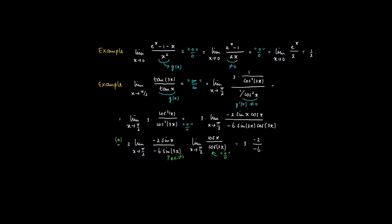So we get 3 times minus 2, since sin(x) goes to 1 at π/2, divided by minus 6, times the limit as x goes to π/2. The derivative of cos(x) is minus sin(x), divided by minus 3 times sin(3x) — so this should be plus 6 instead of minus. The remaining limit is trivial: minus sin(x) tends to minus 1, and minus 3·sin(3x) goes to 3. So we end up with plus one third as the limit.